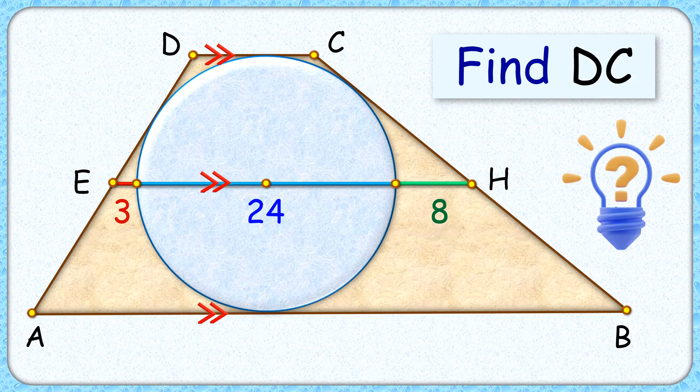In this interesting question we have a circle inscribed in a trapezium ABCD. The line segment EH is passing through the center of the circle and parallel to AB and DC. The exciting part is with the given dimensions of EH we have to find the length of DC.